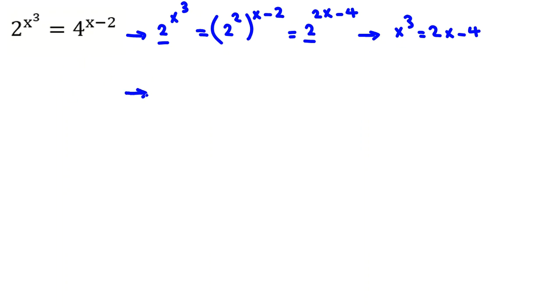Now, we have this polynomial. We take all things to the left-hand side. It will be x³ minus 2x plus 4 equals 0. When the degree is greater than 2, one of the most useful ways is to try to find one root.